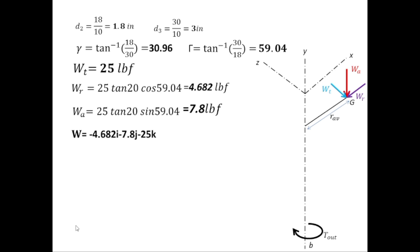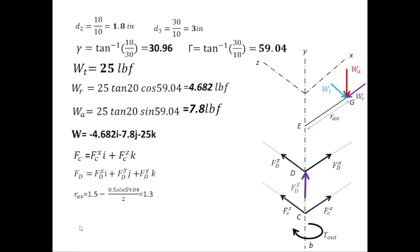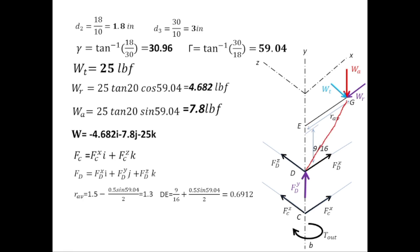From these three forces we can find the reactions at bearings C and D. Write the total force W in unit vector ijk form. Write the reaction forces at bearing C in unit vector form. Bearing D is at point D; write those reaction forces in unit vector form as well. The position vector r_DG = DE·j + r_avg·i = 0.6912j + 1.3i.